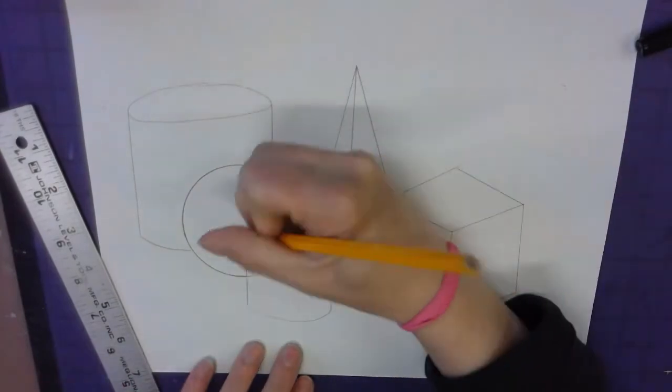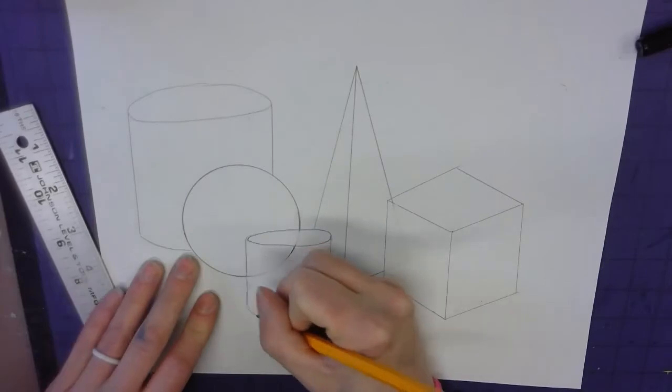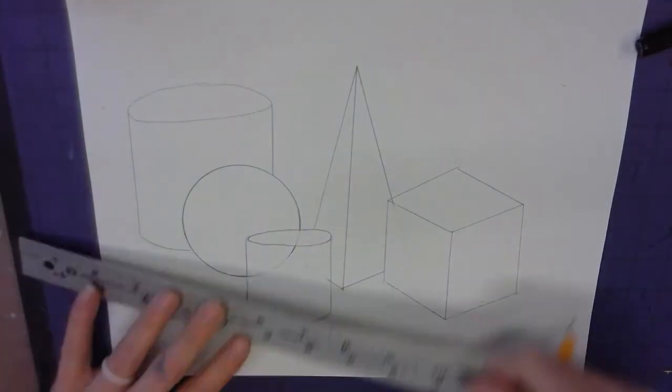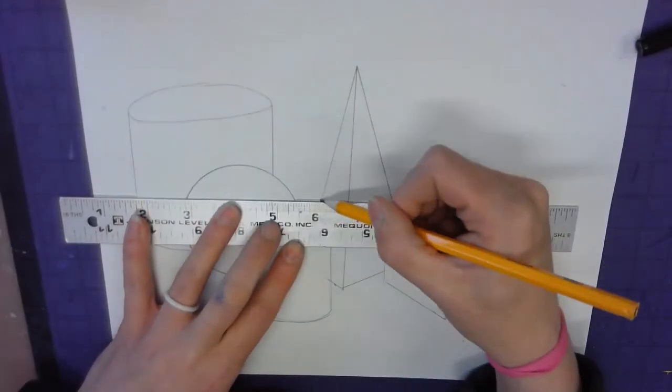Once you have your forms made, we need to make our horizon line for the table. Halfway up on your paper and line, jump, line, jump.